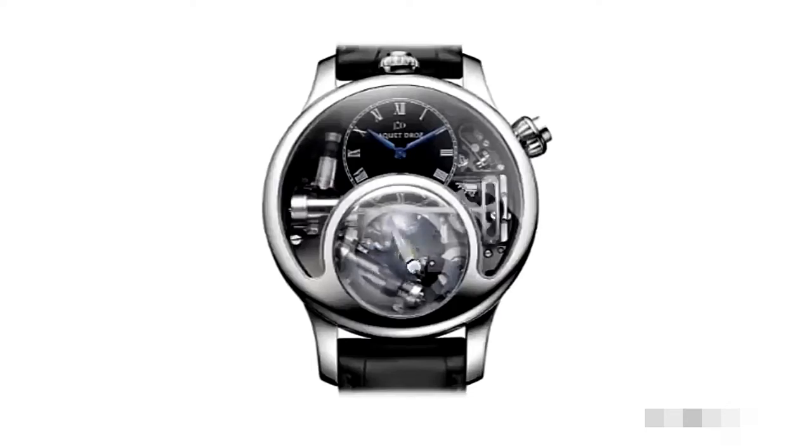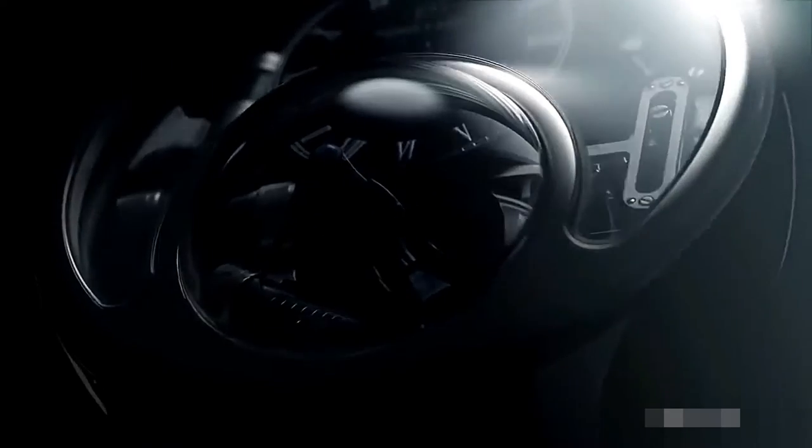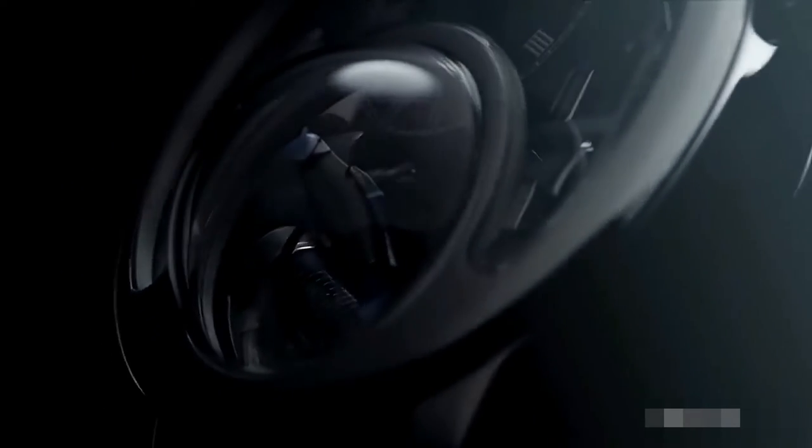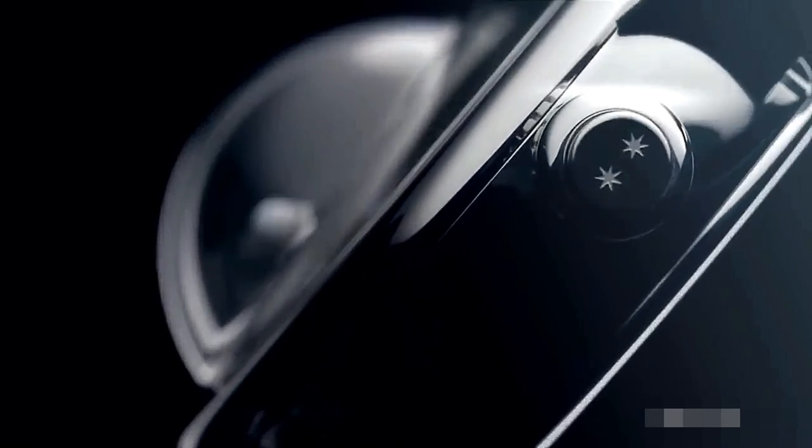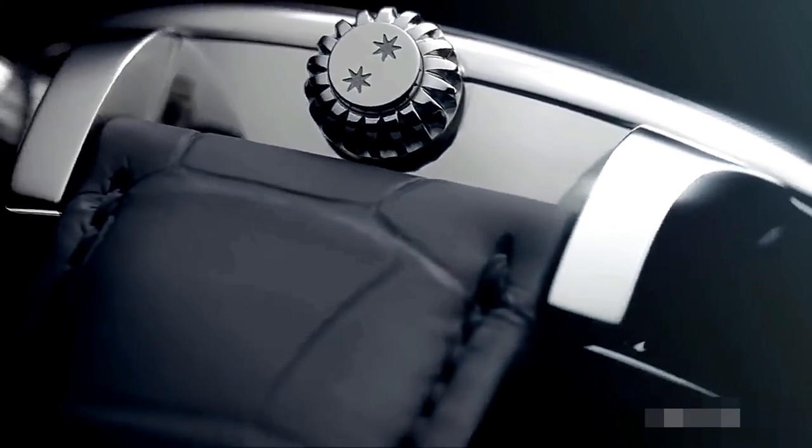Yet another watch by Jacques Droz that features birds front and center is the bird repeater timepiece. This time, a family of automated blue and yellow birds illustrates eight different moving sequences, while accompanied by the minute repeater complications striking the hours, quarters, and minutes. Both of these beautiful watches have secured a place in the hearts of watch enthusiasts.